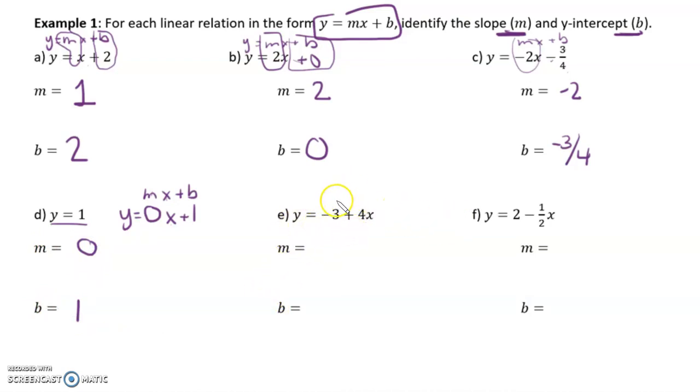Okay, and then e and f are a little bit different because these two numbers would have to switch positions. Right? So, to rewrite this equation, I would have to rewrite it as y equals 4x minus 3. And then we're able to read the mx plus b from that. So, m is 4, b is negative 3.